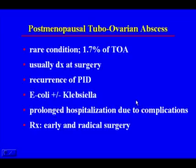Postmenopausal women can also develop tubo-ovarian abscess, though it's rare — seen in only 1.7% of all tubo-ovarian abscesses. These women usually require surgery and the diagnosis is not made preoperatively. The causative agents are usually E. coli or Clostridium. These patients require prolonged hospitalization and develop complications. In a postmenopausal woman with suspected tubo-ovarian abscess, early and radical surgery is important.